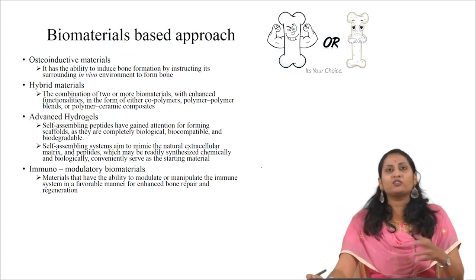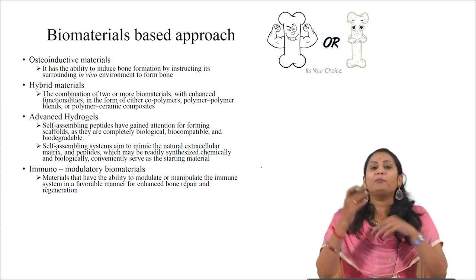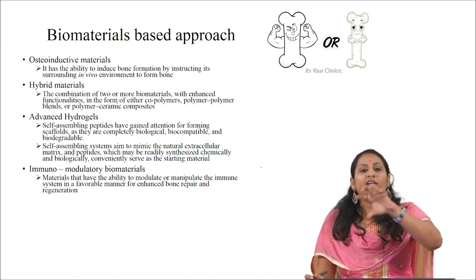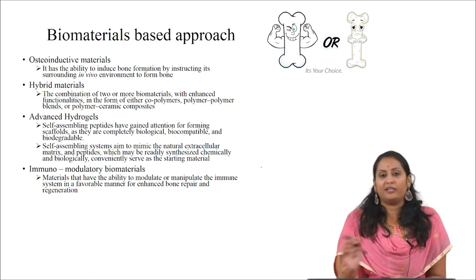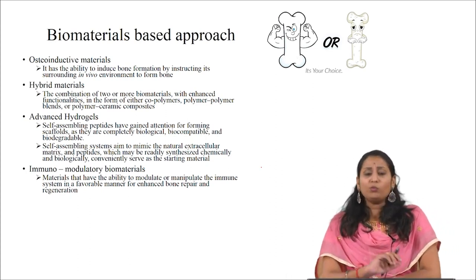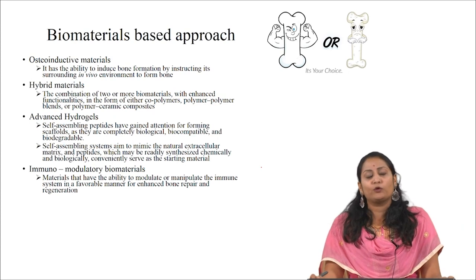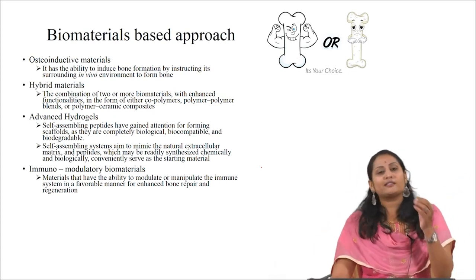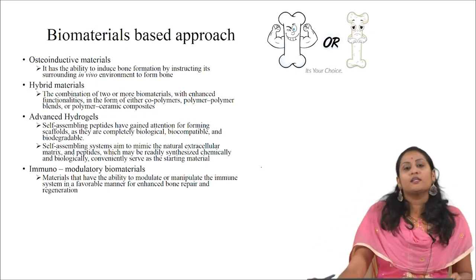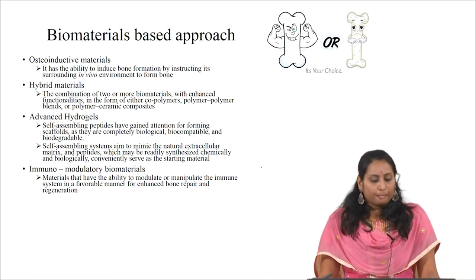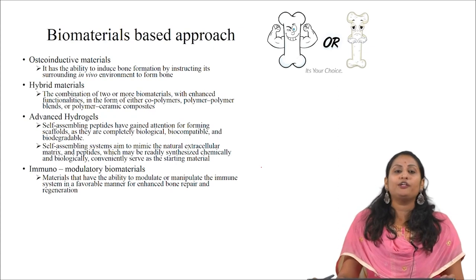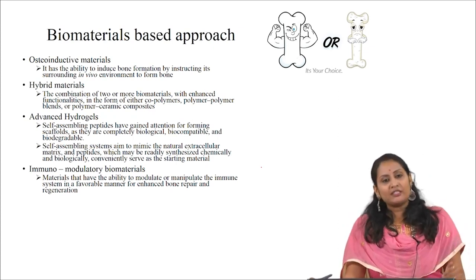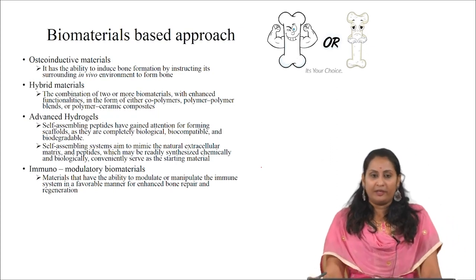In the 2020s, they developed biomimetic materials — a material which mimics the nature of natural material. In this biomaterials-based approach we will focus mainly on third generation materials, for example, polymers and their composites. Again, they are classified into osteoinductive materials, hybrid materials, advanced hydrogels, and immunomodulatory materials.